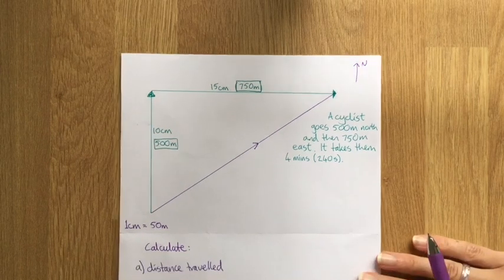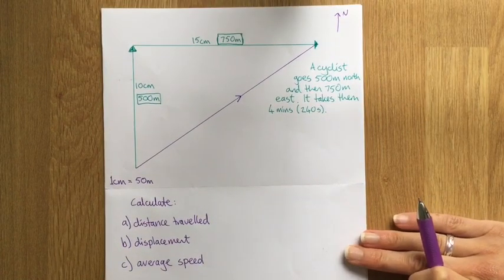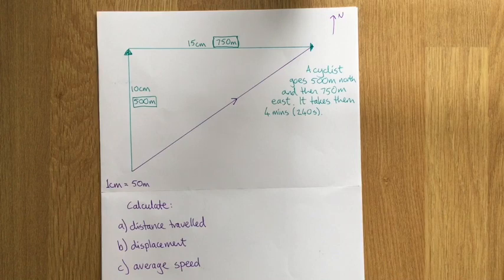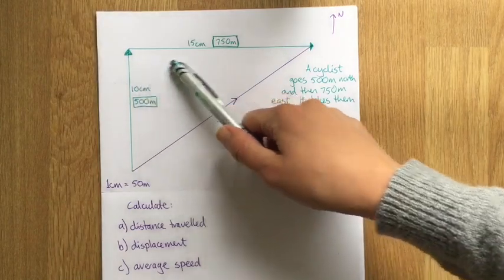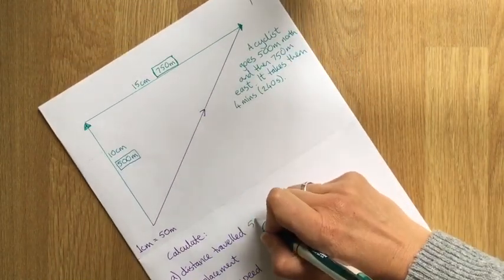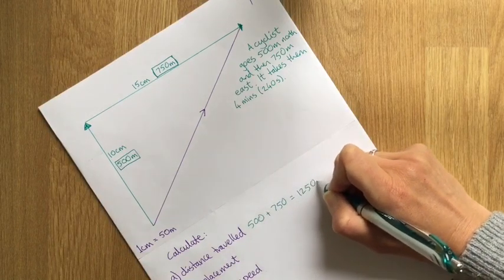What we're being asked to calculate this time won't quite all fit on the page. So how far have they traveled? So physically, how far did they cycle? What's their overall displacement from where they started? What was their average speed and what was their average velocity? And this is where it gets slightly strange. So the distance traveled is just going to be 500 meters plus the 750 meters. So 500 plus 750 equals 1,250 meters.